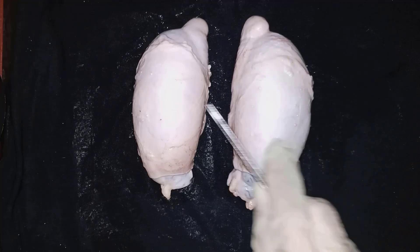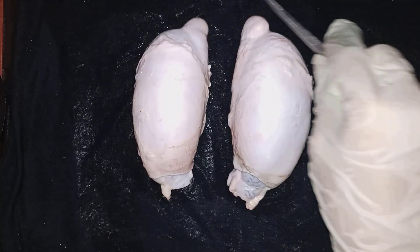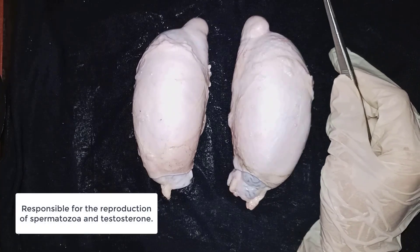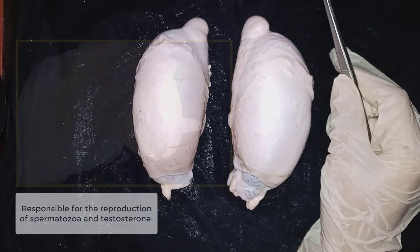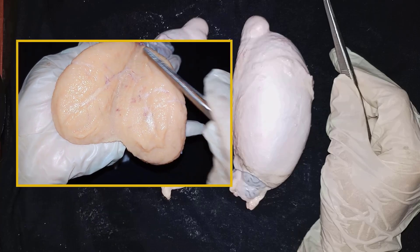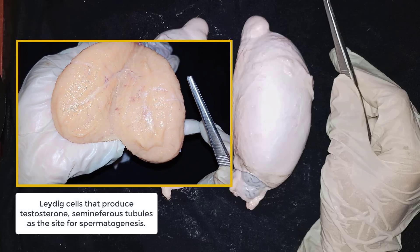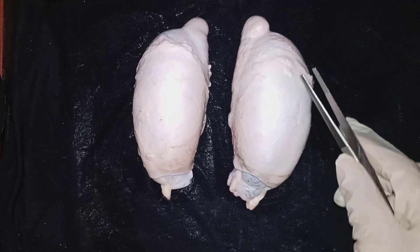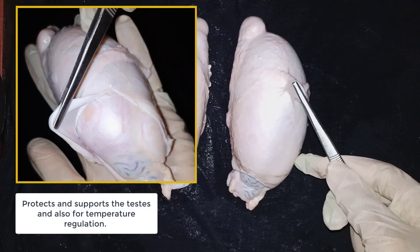The paired testes of a bull are oval and they are responsible for the production of spermatozoa and testosterone. The testes are composed of testicular parenchyma and a mediastinum. The parenchyma consists of the interstitial Leydig cells that produce testosterone, seminiferous tubules as the site of spermatogenesis, and the lymphatic and blood vessels. A cutaneous sac protects and supports the testes and also provides temperature regulation, since the scrotal skin is heavily populated with sweat glands.